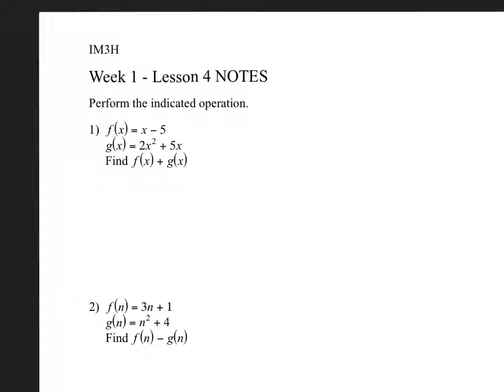Notice on problem number 1 here, you've been given two different functions. There's an F function and a G function. And then down here, it's asking you to add them up. Let me show you what that looks like.